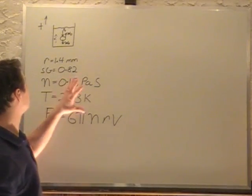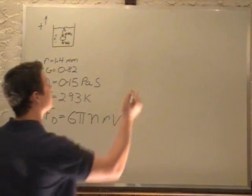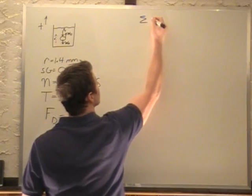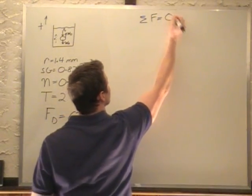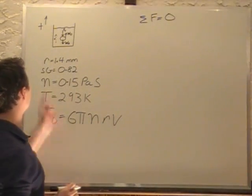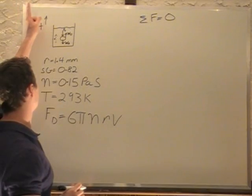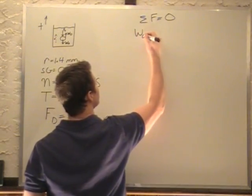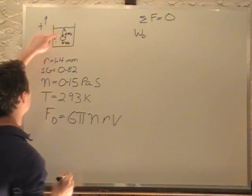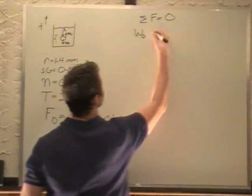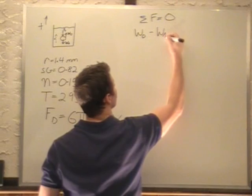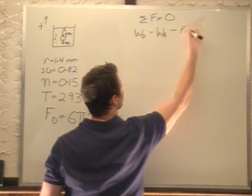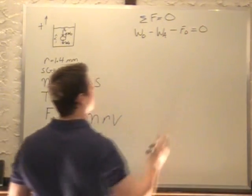Now all we need to do is sum up our forces equal to zero. In the positive direction, because I've defined positive as upward, our weight of the oil displaced, our buoyancy force, minus Fd minus Wa. So minus the weight of the air bubble minus our drag force equals zero.